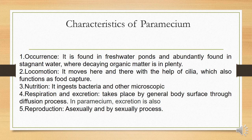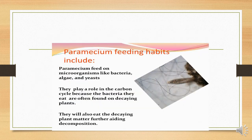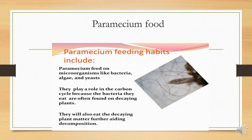The paramecium reproduces by two methods: asexually and sexually. Paramecium feeding habits include eating microorganisms like bacteria, algae, and yeast. By eating bacteria, algae, and yeast, they play a vital role in the carbon cycle, because the bacteria they eat are often found on decaying plants. They will also consume decaying plant matter, further aiding decomposition.